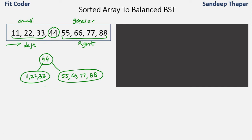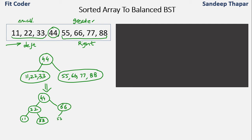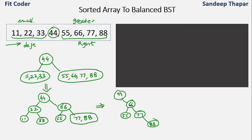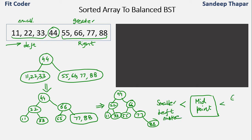We then do the same step recursively for the left and right subtrees. For the left subtree we pick node 22 as the midpoint — the left element goes to the left subtree and the right element to the right subtree. Similarly for the right subtree we pick 66 as the midpoint, so 55 will be on the left and 77, 88 on the right. Then 77 becomes the midpoint for that subarray and 88 goes on the right. In every step we find the midpoint, it becomes the node, smaller elements go left and greater elements go right.